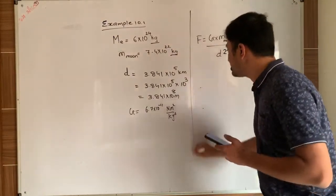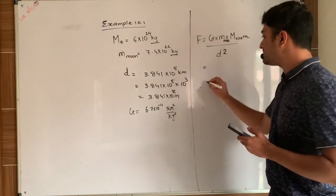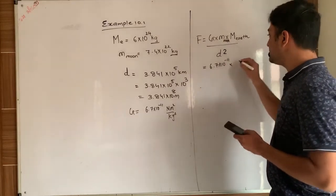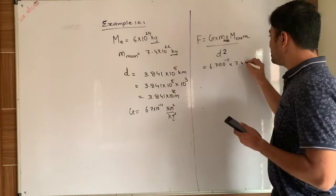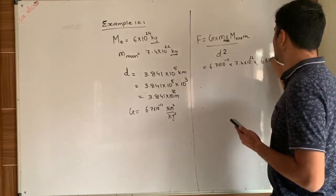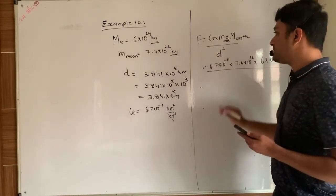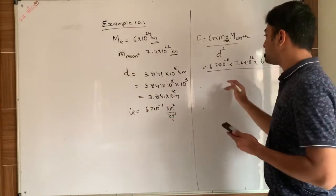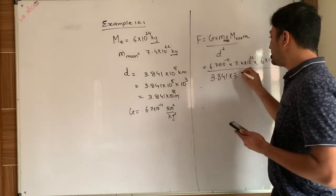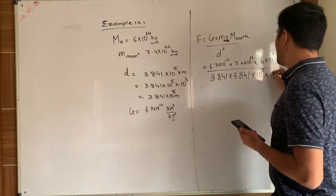Now we will start the calculation of this numerical. We will put values one by one. So G value is 6.7 into 10 to the power minus 11. Mass of moon is 7.4 into 10 to the power 22 into mass of earth is 6 into 10 to the power 24 whole divided by D square. So I will write distance square. That is 3.84 into 3.84 into 10 to the power 8 into 10 to the power 8.